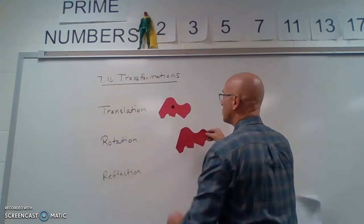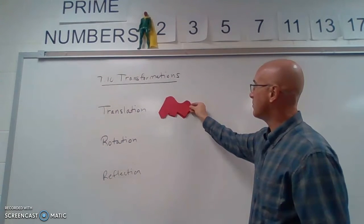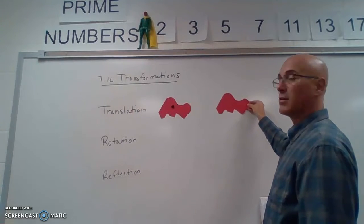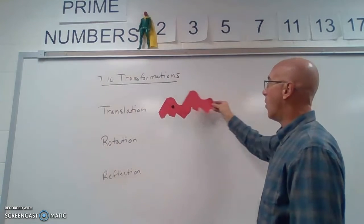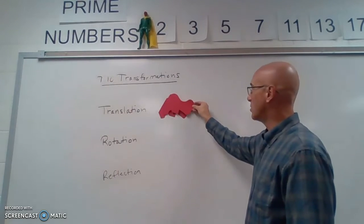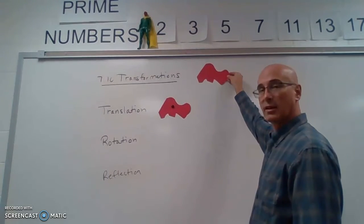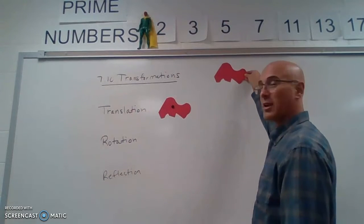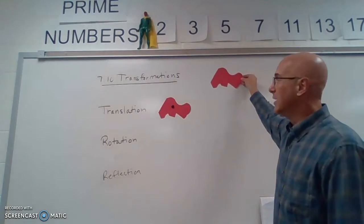If I wanted to do a translation, it simply means I am going to move it over some amount of units. Or I might move it down. I'm translating it in a certain direction. I can do it diagonally, which really means going one direction then another direction. That is called a translation.